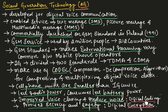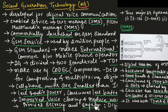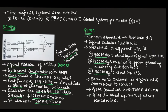2G uses a digital coding technique that improves voice clarity and reduces noise. It also uses encryption that provides secrecy and safety, meaning there was security between voice calls used in 2nd generation, providing safety of the calls.